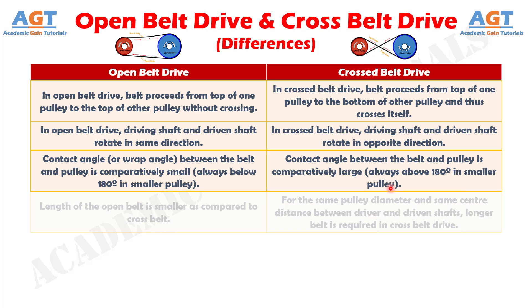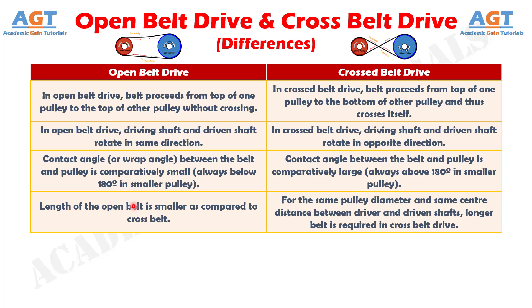Number 4: the length of the open belt is smaller as compared to cross belt, whereas for the same pulley diameter and same center distance between driver and driven shafts, a longer belt is required in cross belt drive.